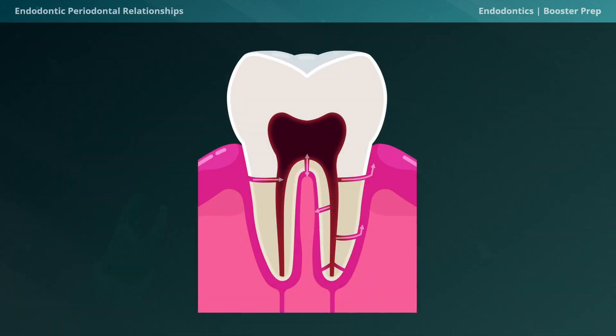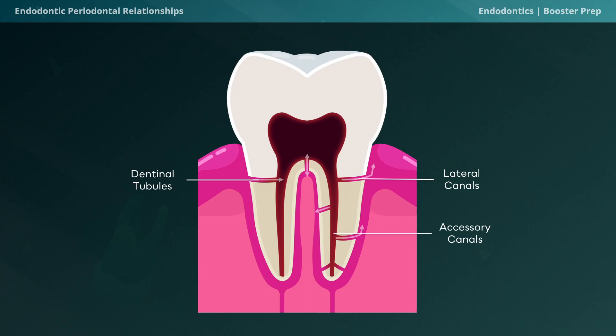The pulp and vascularity of the tooth is something that we need to keep closed off from bacteria, but sometimes we can get communication of the pulp and the periodontium. This can happen through dental tubules, through lateral and accessory canals — lateral canals are located in the coronal or middle third of the root, whereas accessory canals are in the apical third — through furcation canals, and finally through the apical foramen itself.